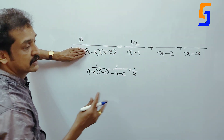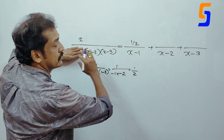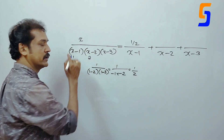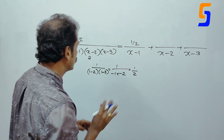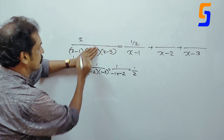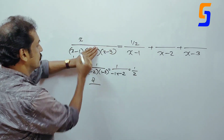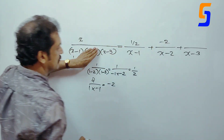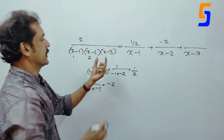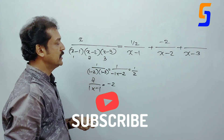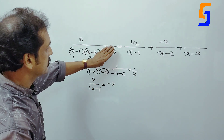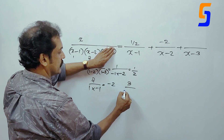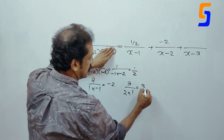First numerator: it will give you three simple items. The second bracket x minus 2: x is 2. 2 divided by 2 minus 1, that is 1. 2 minus 3 is minus 1, so answer is minus 2. Next, third bracket x minus 3: x is 3. 3 divided by 3 minus 1, that is 2. 3 minus 2 is 1. Answer is 3.